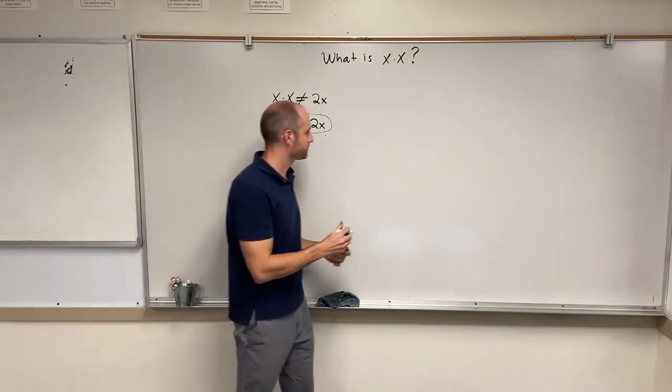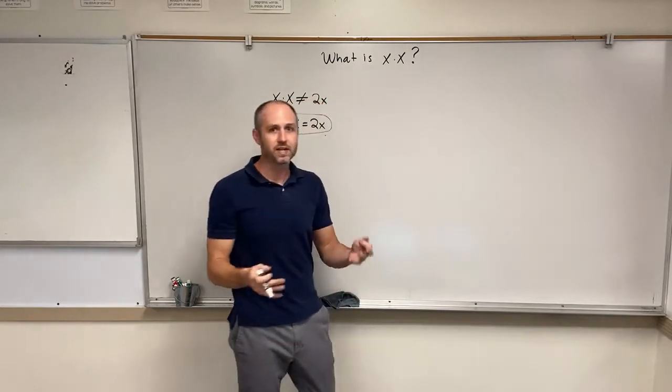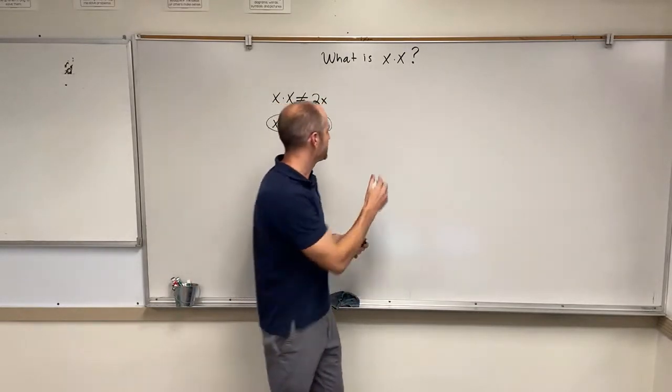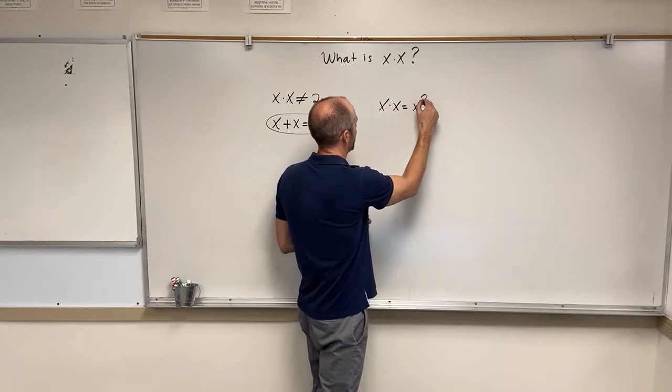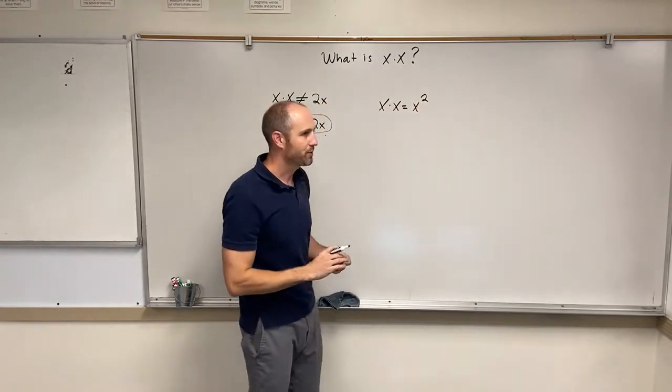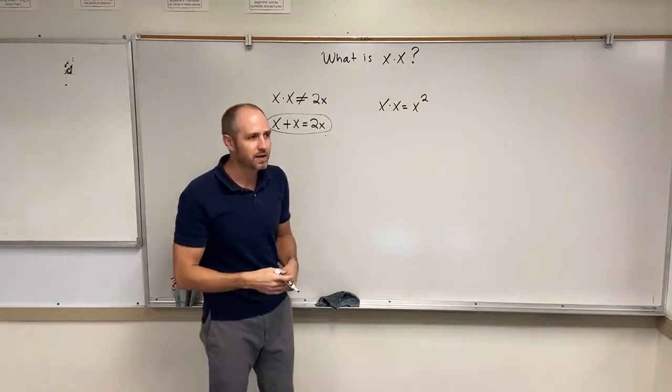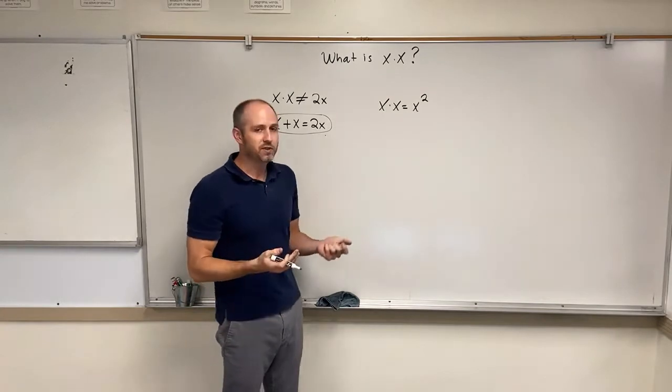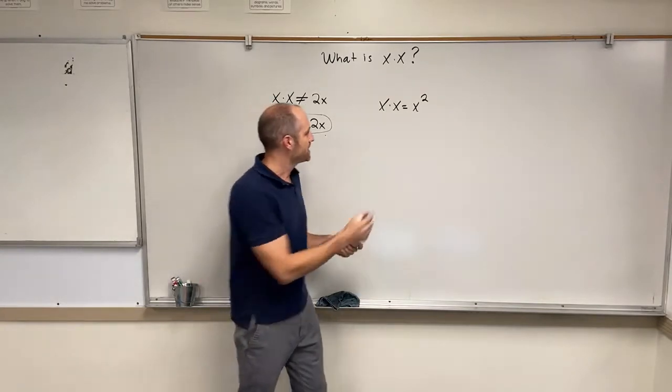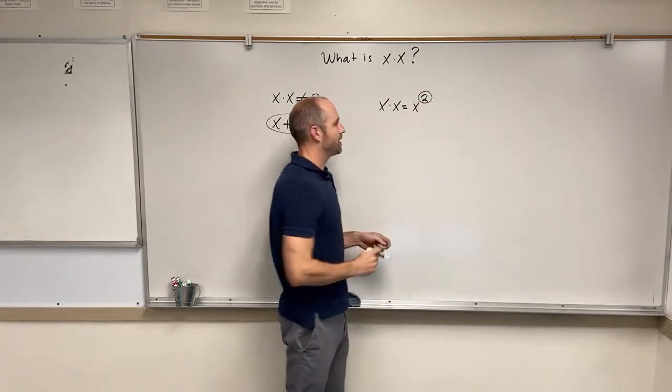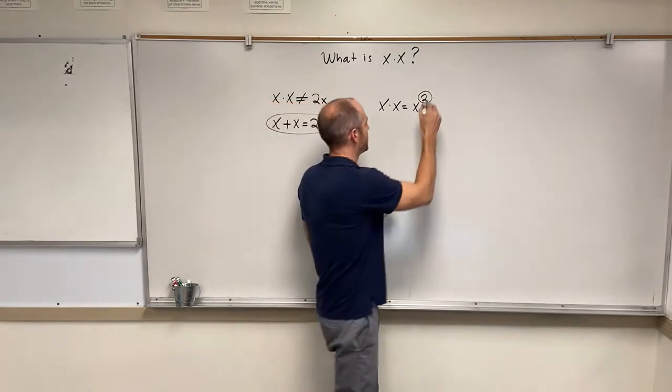So x times x, we say, is x squared. Okay, so we say x times x is equal to x to the power 2. And the reason why we write it like this is because of what the meaning of exponent is. So this exponent, this little number up here written on the top of the variable right there, is called an exponent.